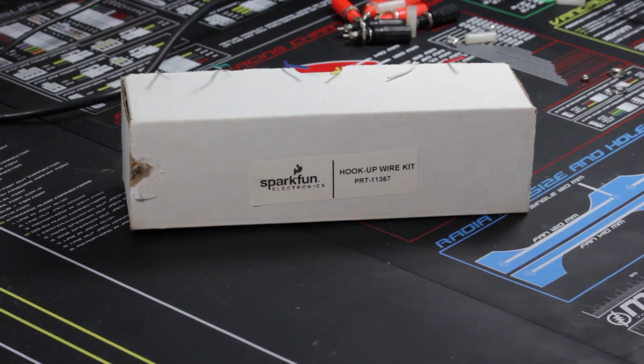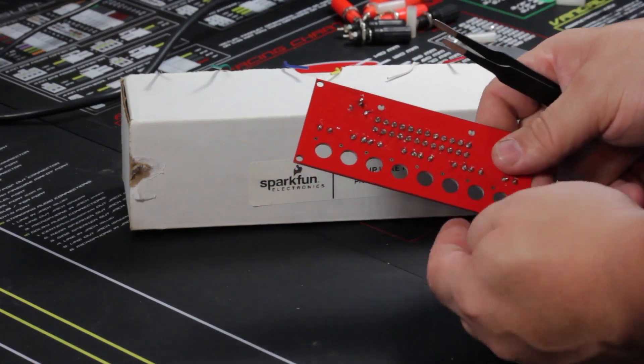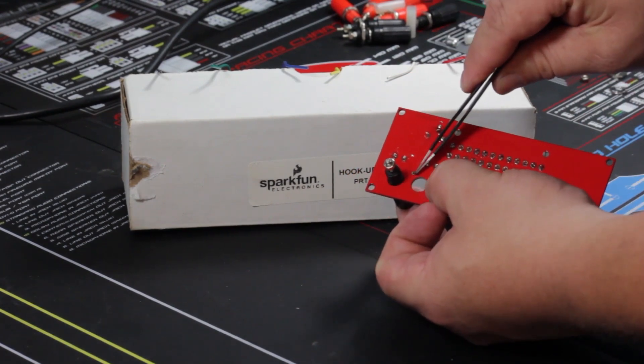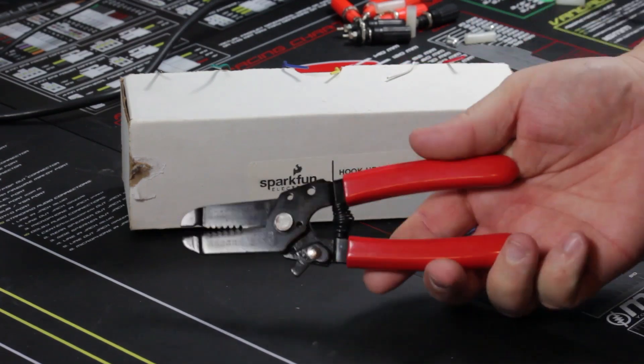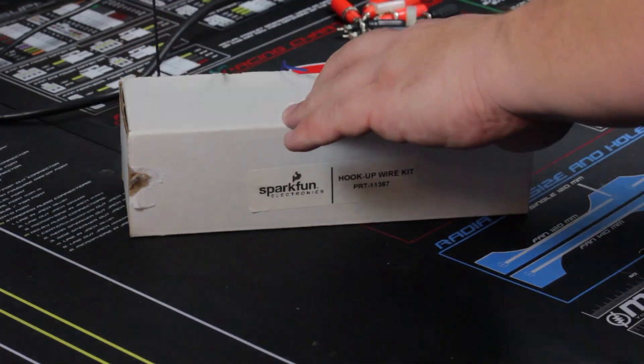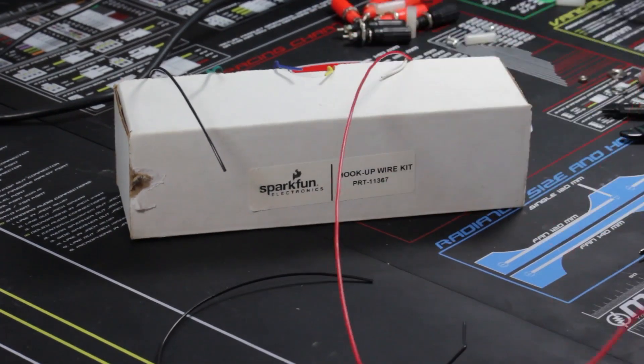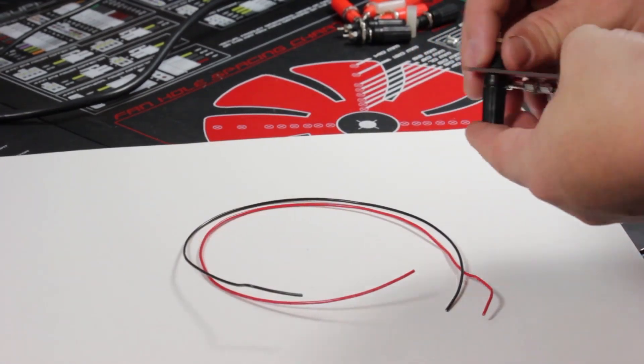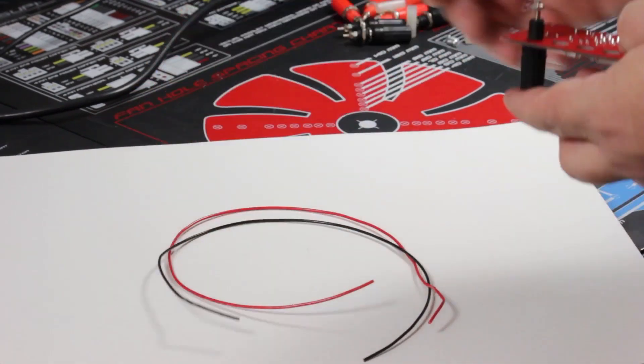With everything soldered up, we need to cut a few jumper wires to connect the binding posts to the circuit board.